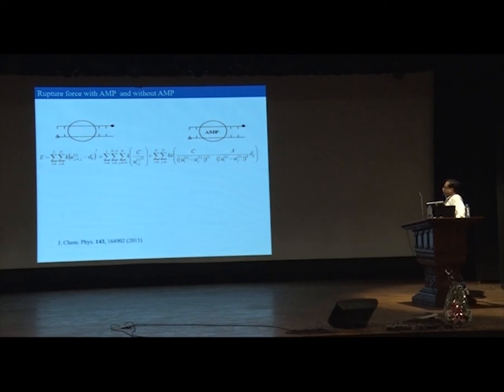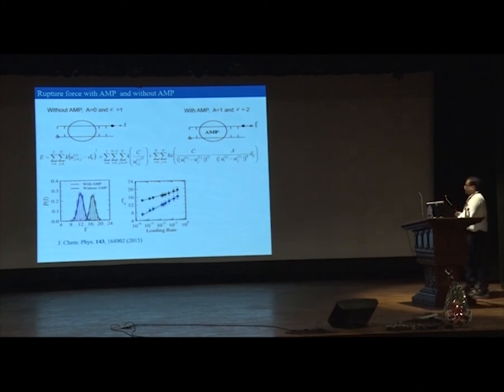This is our model Hamiltonian which we like to solve. How to model this AMP? We approach it very simply - whenever there is a base pocket, there is no interaction, so we consider epsilon = 0 in our Hamiltonian, meaning there is no base pair. If epsilon = 1 it corresponds to a normal base pair, and if there is AMP then we put this value equal to 2, so it is stronger. We have three kinds of interaction in the model system: first, no AMP means epsilon = 0. If there is usual base pairing then epsilon = 1, and if it is AMP then epsilon = 2. We do the Langevin dynamics simulation and try to find out what is the force distribution.